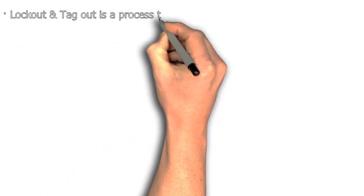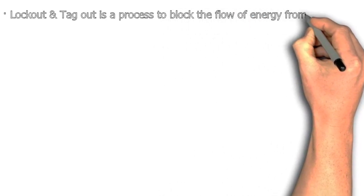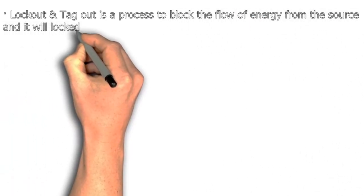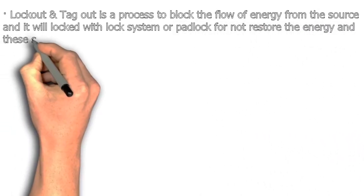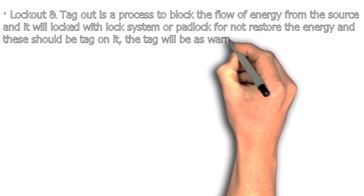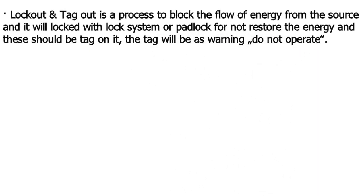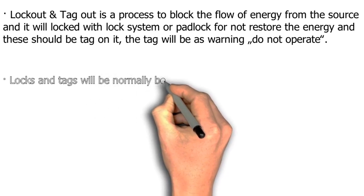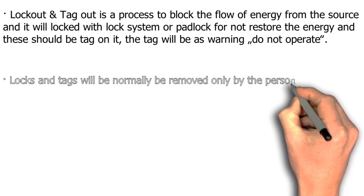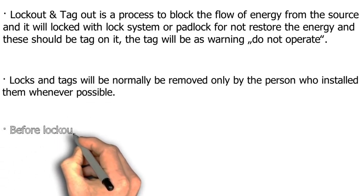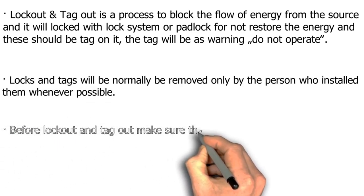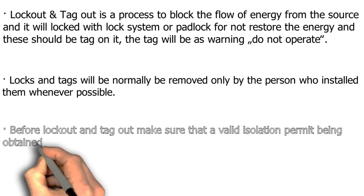Define Lockout/Tagout (LOTO) system. Lockout and tagout is a process to block the flow of energy from the source. It is locked with a padlock to prevent restoration of energy and tagged with a warning — do not operate. Locks and tags will normally be removed only by the person who installed them. Before lockout and tagout, ensure a valid isolation permit has been obtained.